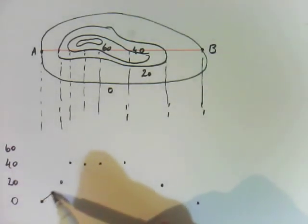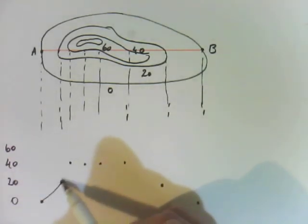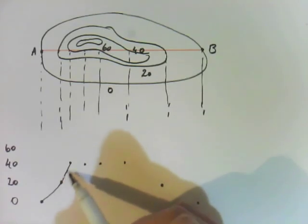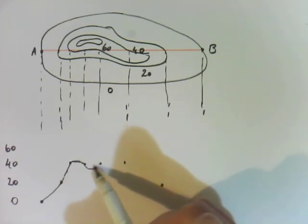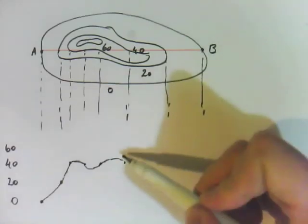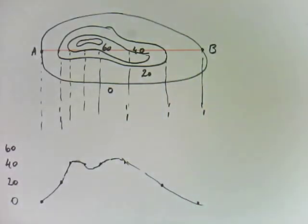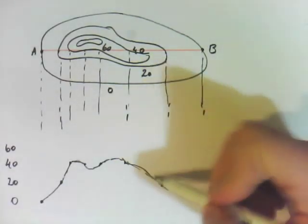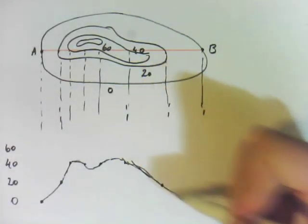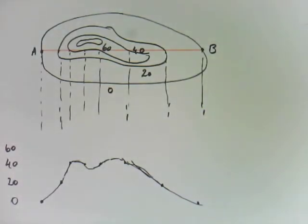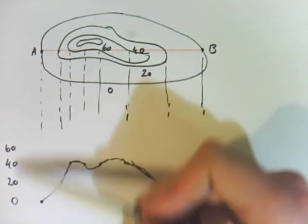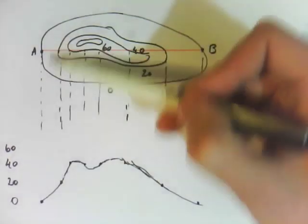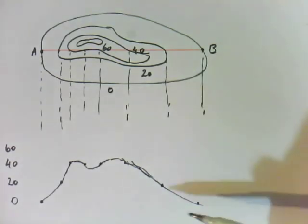Now we just connect the dots — up to 40, a little bit above, back down a little bit below, a little bit above, and then back down the other side. That's the side profile of that mountain. The easiest way is to bring them down, draw a scale so you can work out where you are, and line it all up underneath.